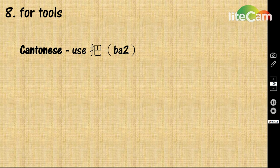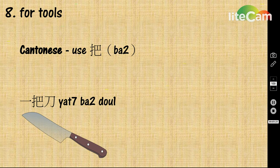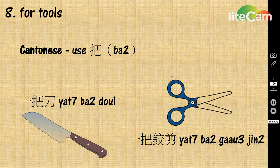For tools, the quantifier 把 is often used. For example, 一把刀 means a knife, and 一把膠剪 means a pair of scissors.